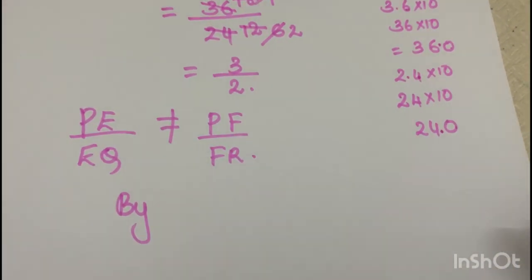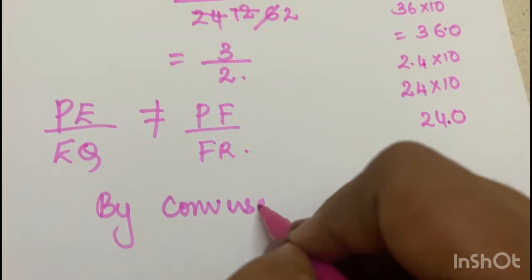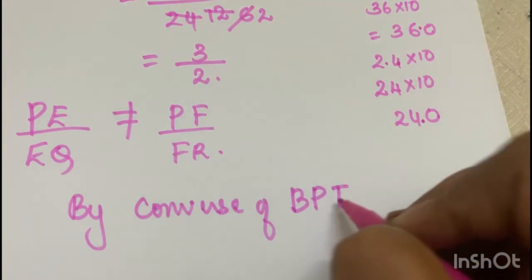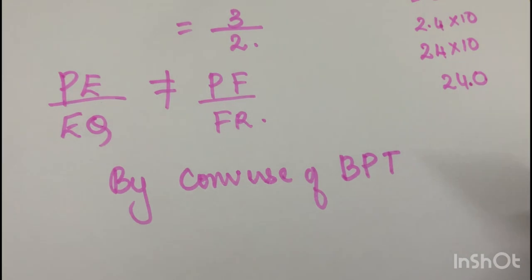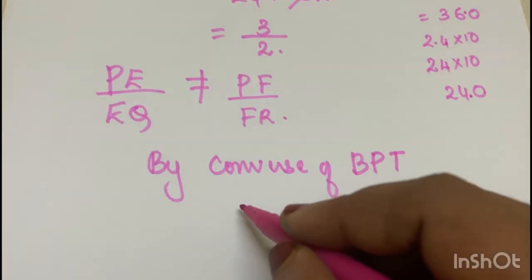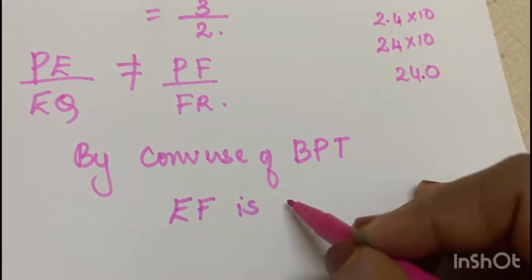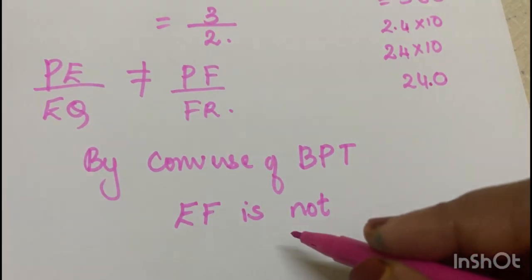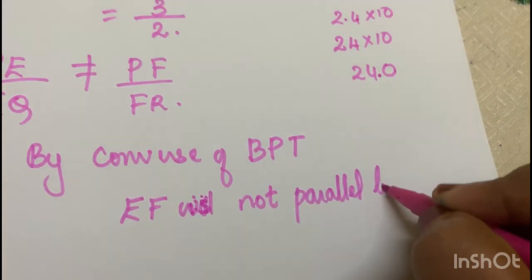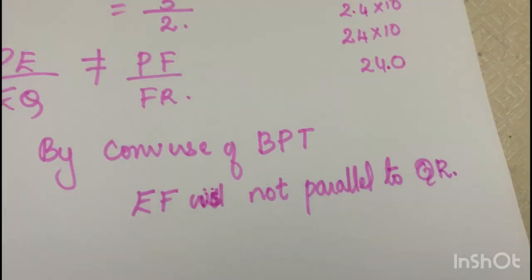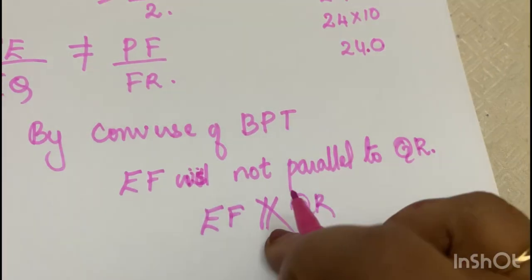That is the Converse of Basic Proportionality Theorem. By Converse of BPT, we will see that these two lines are not parallel to QR. By Converse of BPT theorem, EF will not be parallel to QR. So these two lines are not parallel to QR.